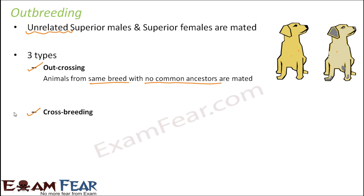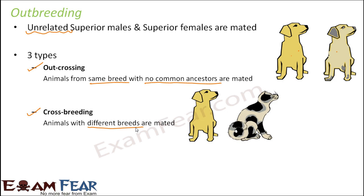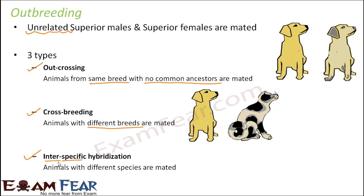The next type is cross-breeding, where animals of different breeds are mated — the male and the female belong to two different breeds altogether, making them even less related. The third type is interspecific hybridization, where animals belonging to two different species are mated. Interspecific refers to hybridization between two species.